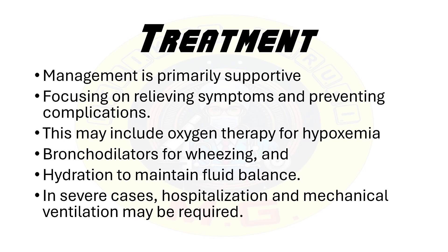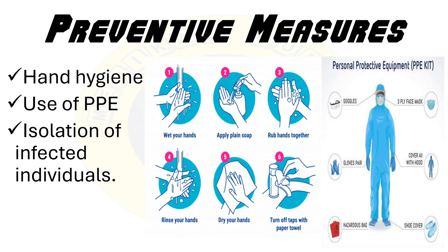When it comes to treatment, there are currently no specific antiviral therapies approved for HMPV. Management is primarily supportive, focused on relieving symptoms and preventing complications. This may include oxygen therapy for hypoxemia, bronchodilators for wheezing, and hydration to maintain fluid balance. In severe cases, hospitalization and mechanical ventilation may be required. Preventive measures are essential in reducing transmission of HMPV, including standard infection control practices such as hand hygiene, use of personal protective equipment, and isolation of infected individuals. Research into potential vaccines and antiviral agents is ongoing, with the hope of developing effective prophylactic and therapeutic strategies in the future.